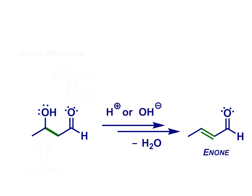The elimination step can occur under either acidic or basic conditions. Under acid catalysis, think of protonating on oxygen and losing water in an E1 process. Under basic catalysis, think about an E1CB reaction.